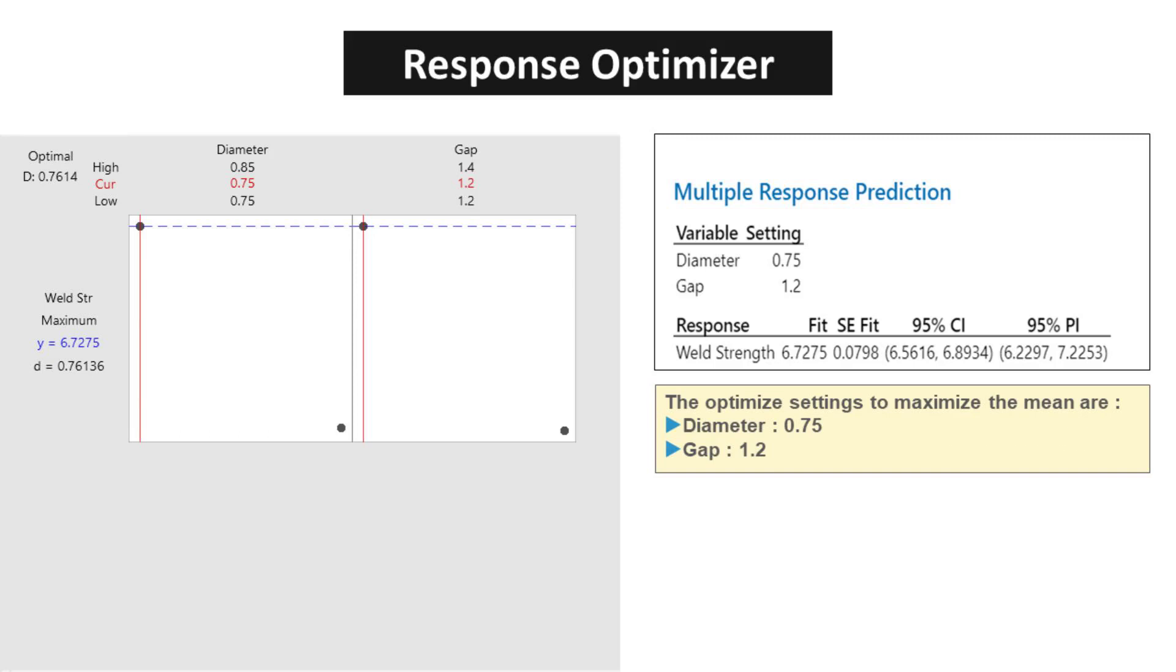Composite Desirability (D) evaluates how the settings optimize a set of responses overall. Desirability has a range of 0 to 1. 1 represents the ideal case. 0 indicates that one or more responses are outside their acceptable limits. Here, the optimal desirability 0.7614 is close to 1, which indicates the settings seem to achieve favorable results for the response.